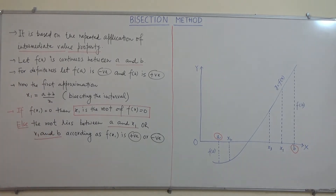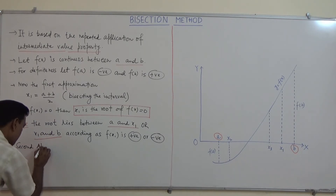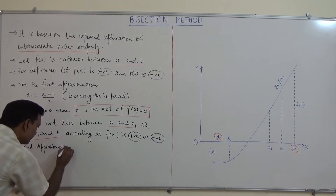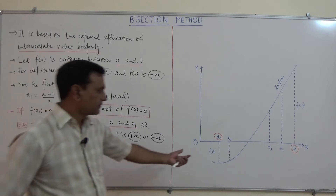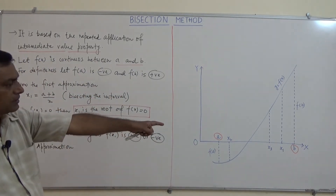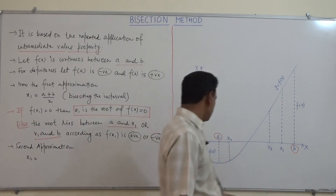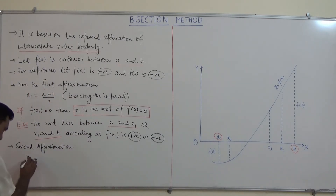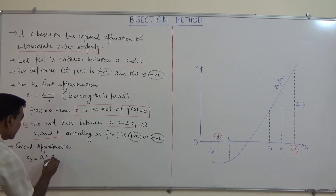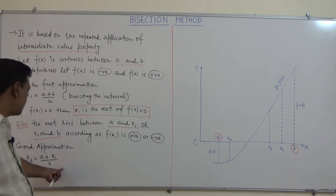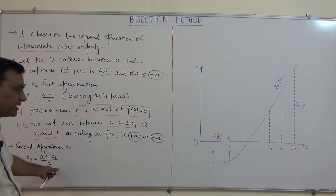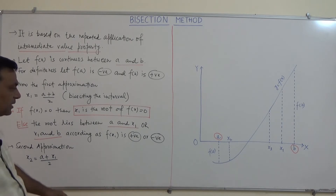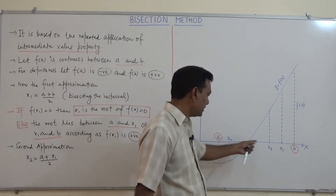After this, we find the second approximation x2. From the figure, since f(x1) is positive, the root will lie between a and x1. So x2 = (a + x1) / 2. Here we are again bisecting the interval, and the value of x2 will lie between a and x1.